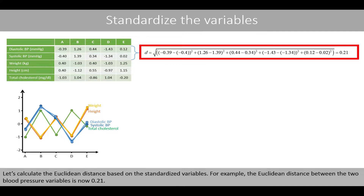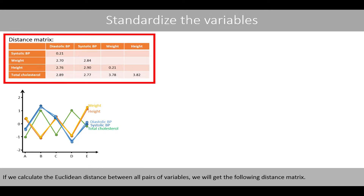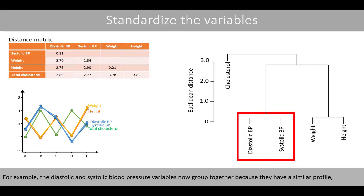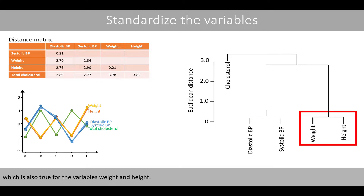Let's calculate the Euclidean distance based on the standardized variables. For example, the Euclidean distance between the two blood pressure variables is now 0.21. If we calculate the Euclidean distance between all pairs of variables, we get the following distance matrix. We can then generate the following dendrogram using the same method as before. For example, the diastolic and systolic blood pressure variables now group together because they have a similar profile, which is also true for the variables weight and height.